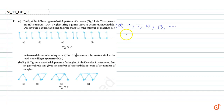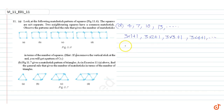In terms of the number of squares, the number of matchsticks in each pattern is: 3×1+1, 3×2+1, 3×3+1, and 3×4+1, and so on. Therefore, the matchstick pattern in terms of the number of squares n is 3n + 1, where n is the number of squares.